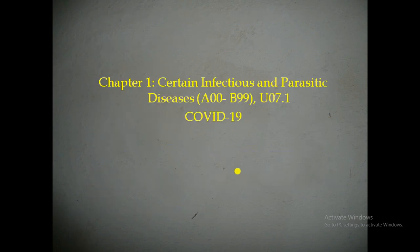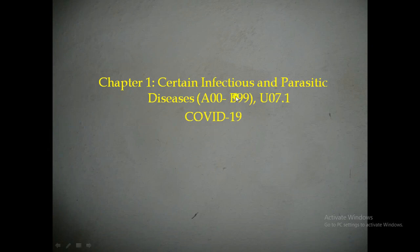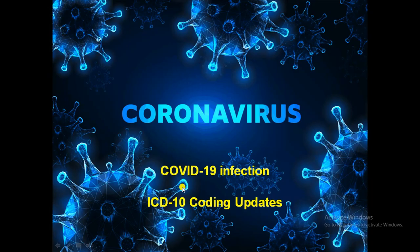In chapter 1, coronavirus infection updates include U07.1, which is a new code for COVID-19. As you all know, the whole world is facing the pandemic COVID-19.